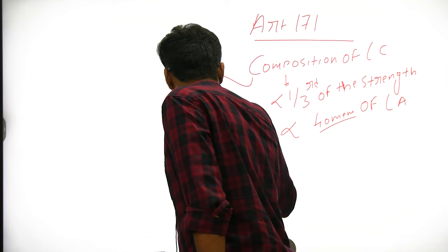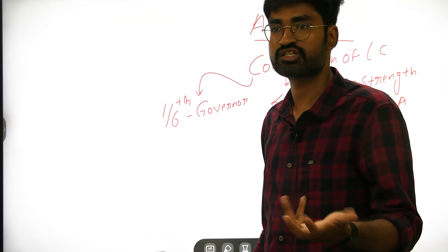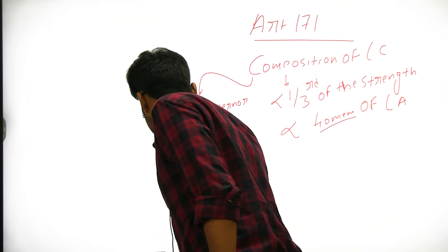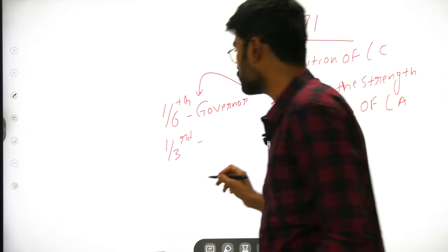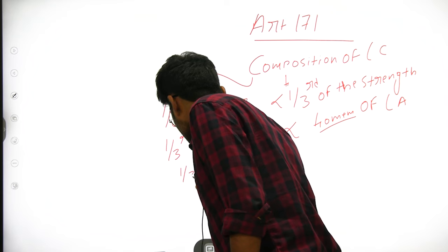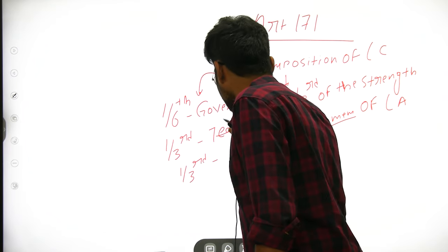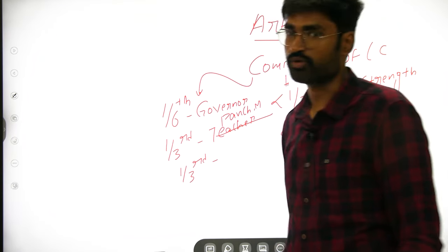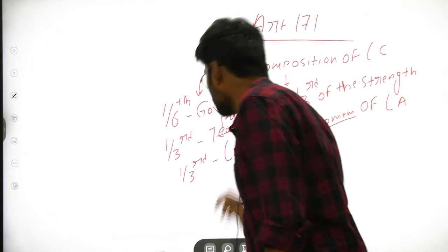The Governor nominates members from different professions such as literature, science, arts, and cooperative societies. One third of the members are elected by teachers, and another one third are elected by the members of the legislative assembly.